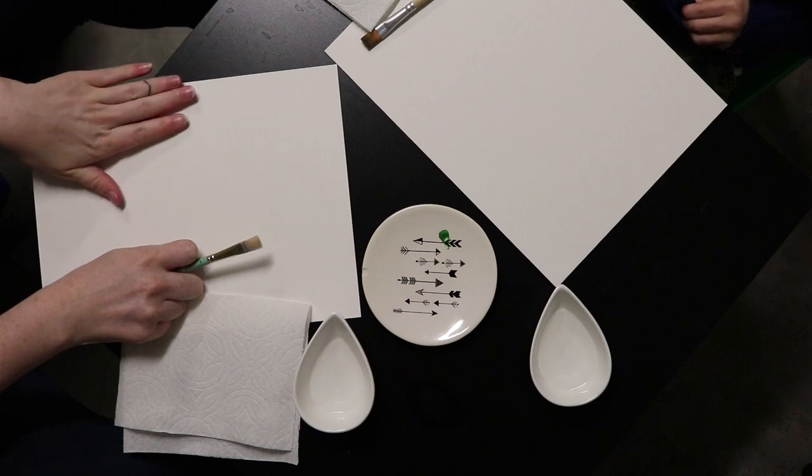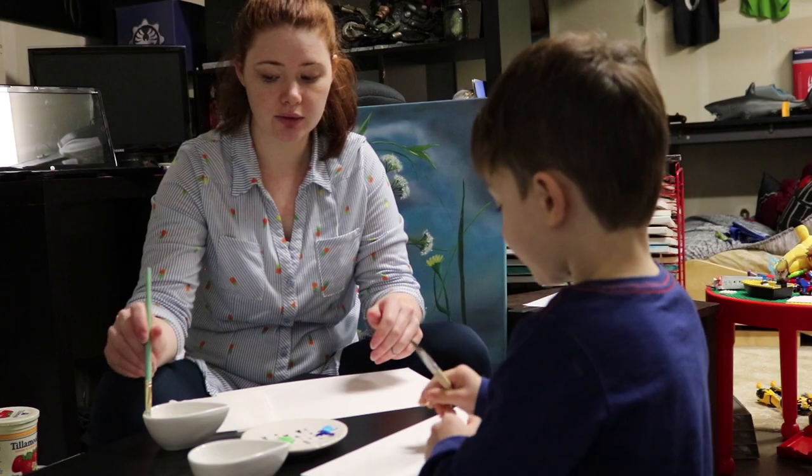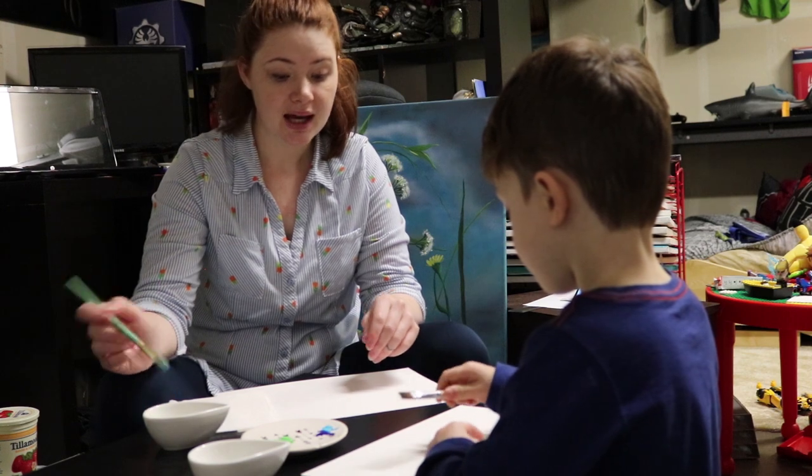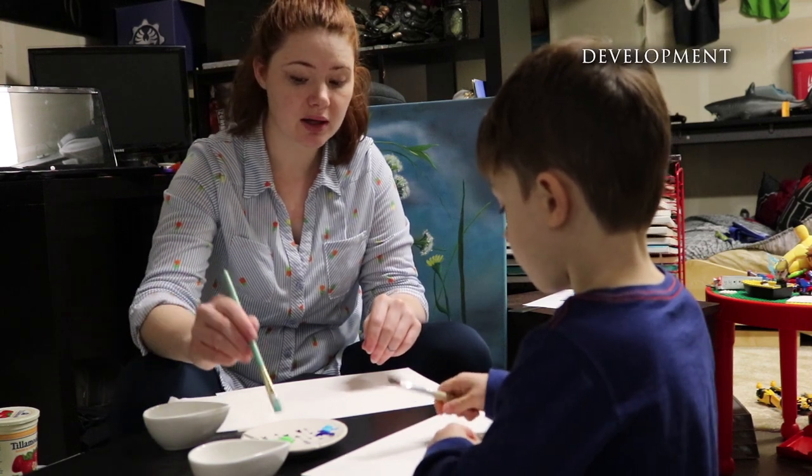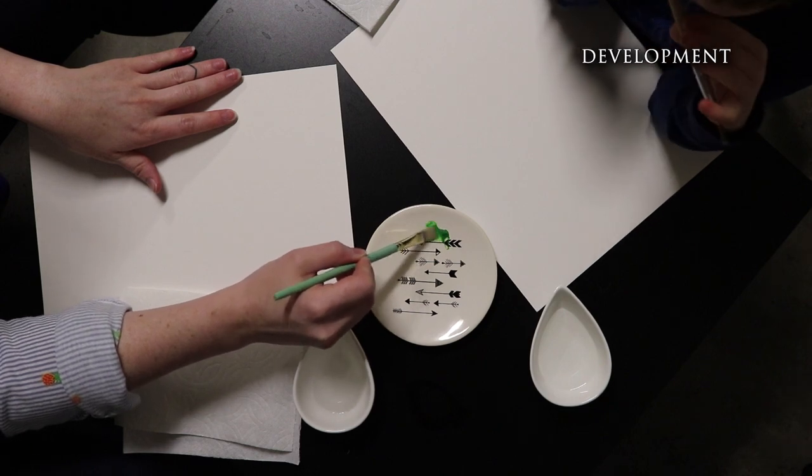Here we have our watercolor paper. We're going to take our paint brush, put in a little bit of water, and then we're going to put it in a little bit of paint. Just like this.